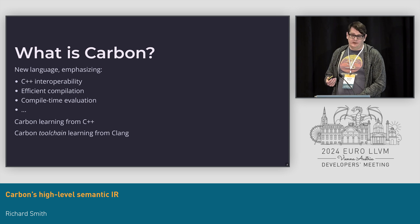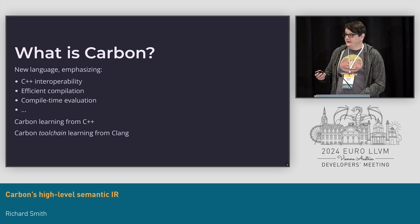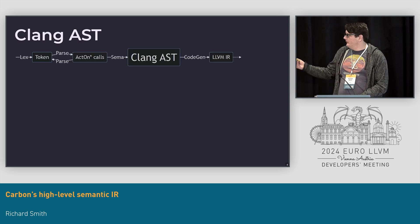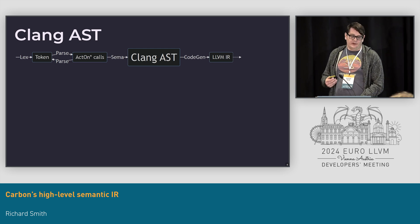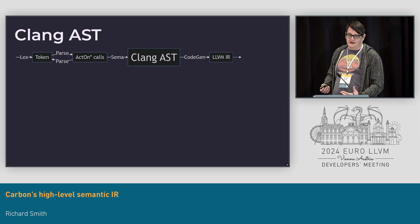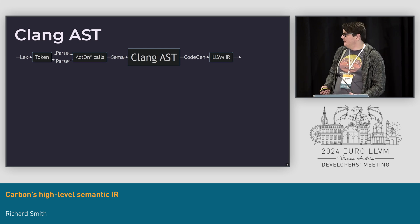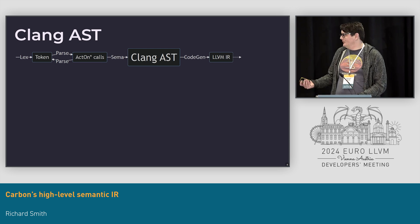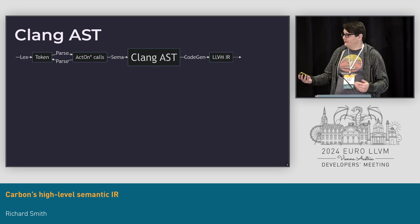When we're talking about a semantic representation for Carbon, it makes sense to look at what Clang is doing. Clang's first persistent representation of the program is the Clang AST, which is formed from parsing tokens, calling SemA, and then building this structure.